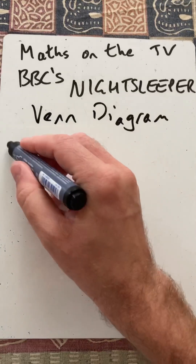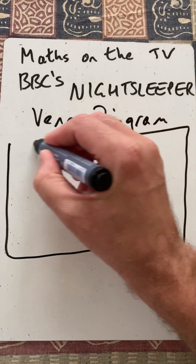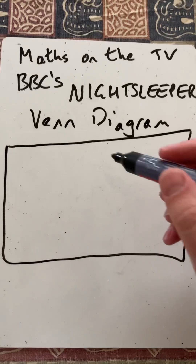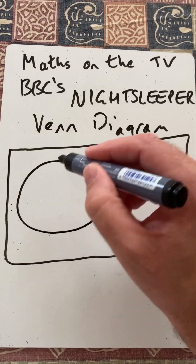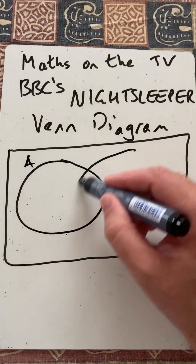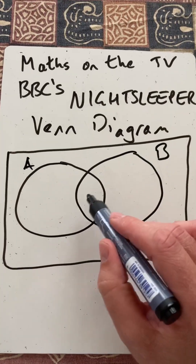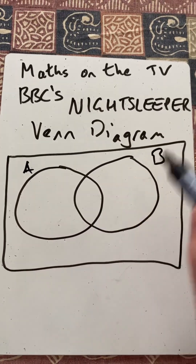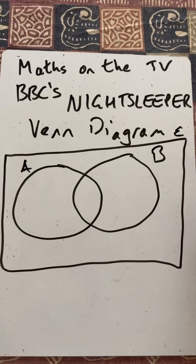So it's one of these, where this is a set, a group, and within that there'll be a subset A and another subset B, and there might be some that fall into both groups within what's called the universal set.